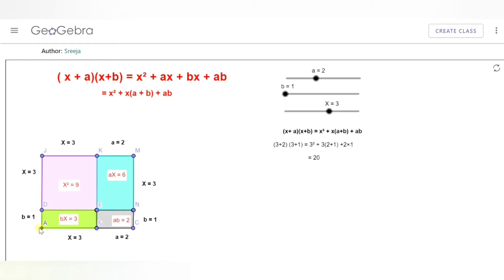Now here I have a rectangle of side (x + a) and on this side it is (x + b). The area of this complete entire rectangle would give me the product (x + a)(x + b), which is the area of JMCA.